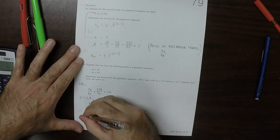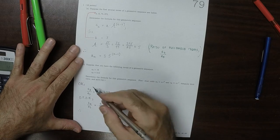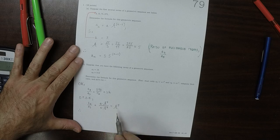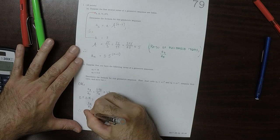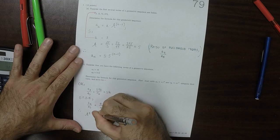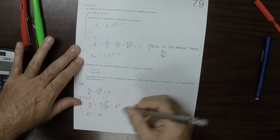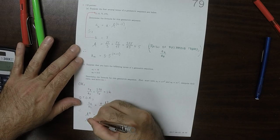And therefore, since a_8 divided by a_3 is 32, we have that r to the 5 is 32. And there's only one solution to that equation. That's r is 2.